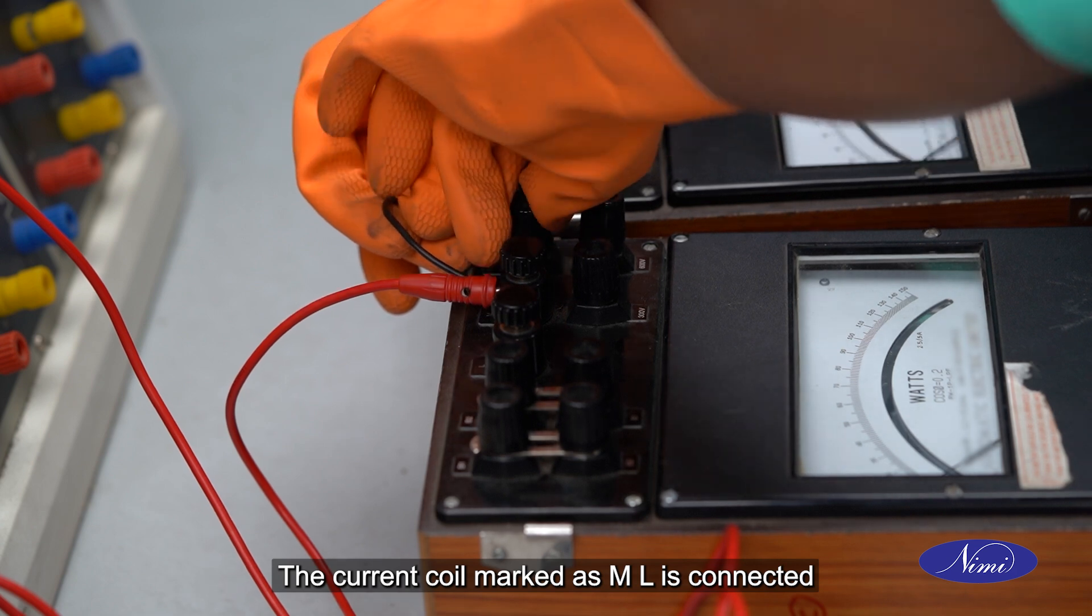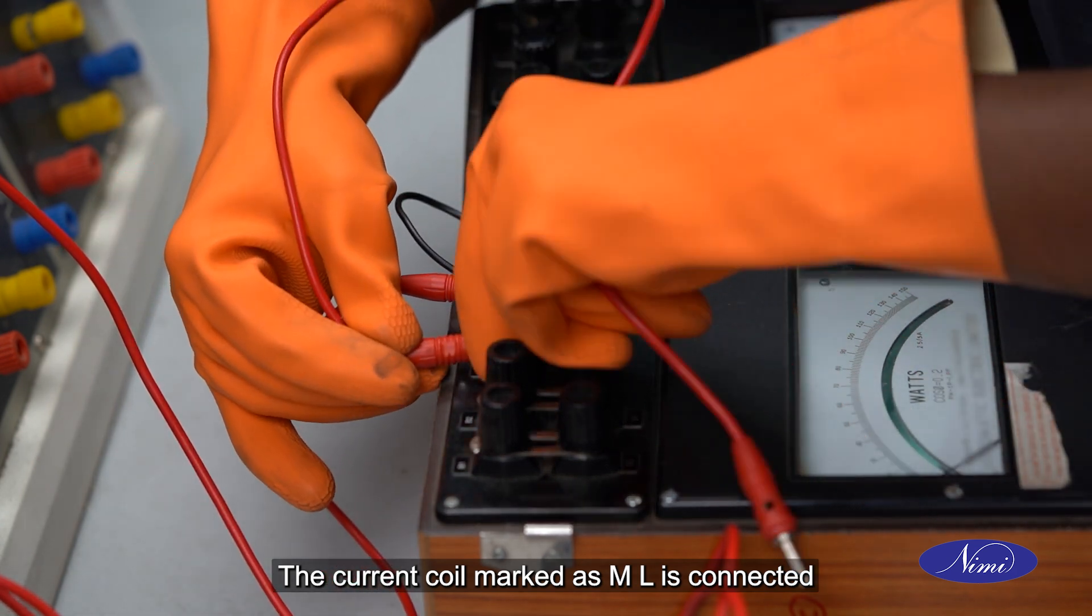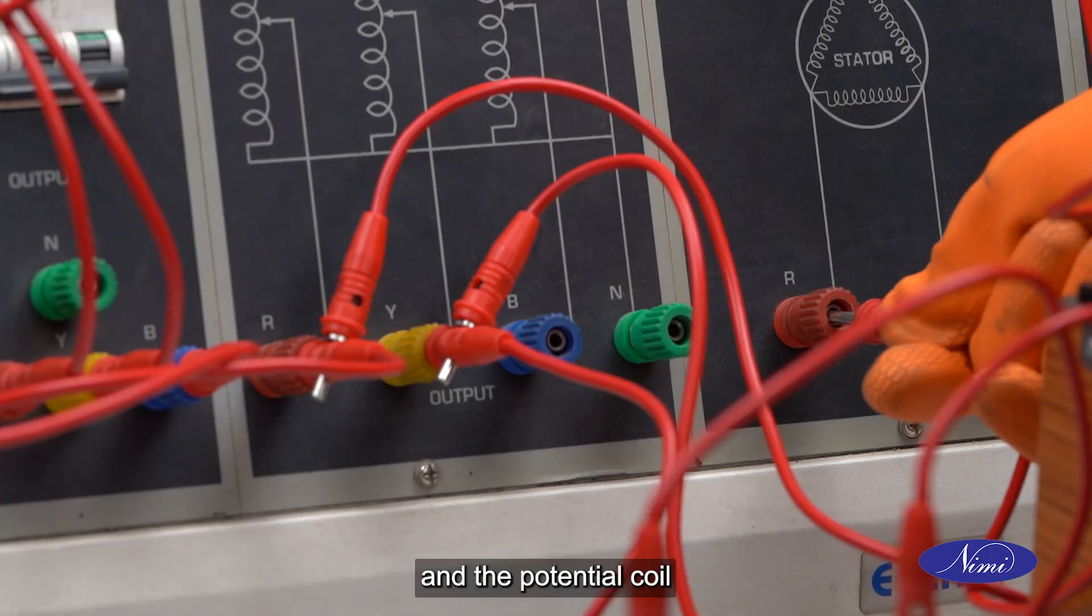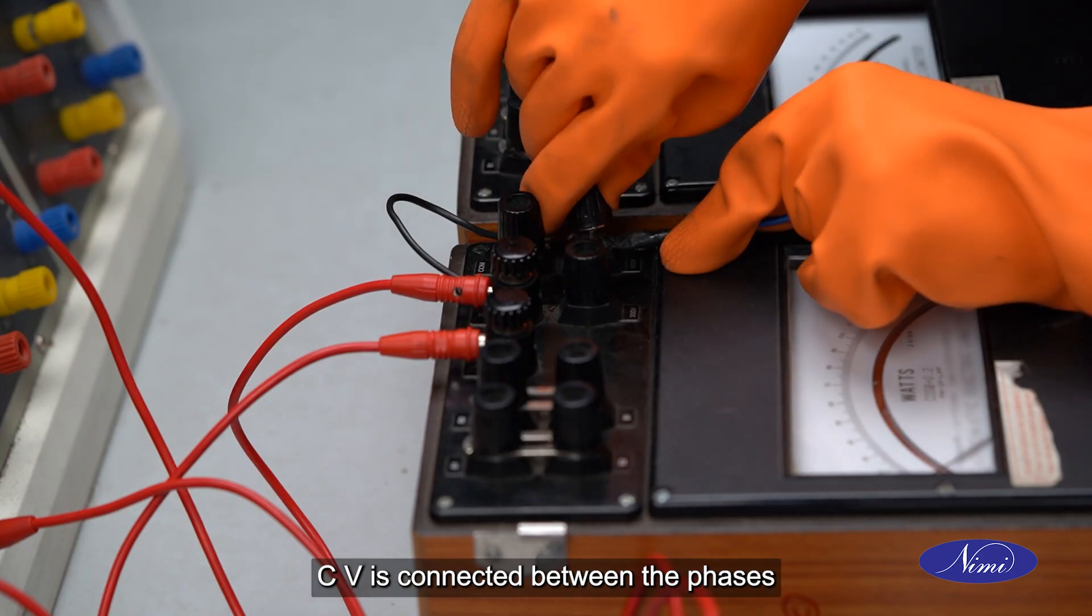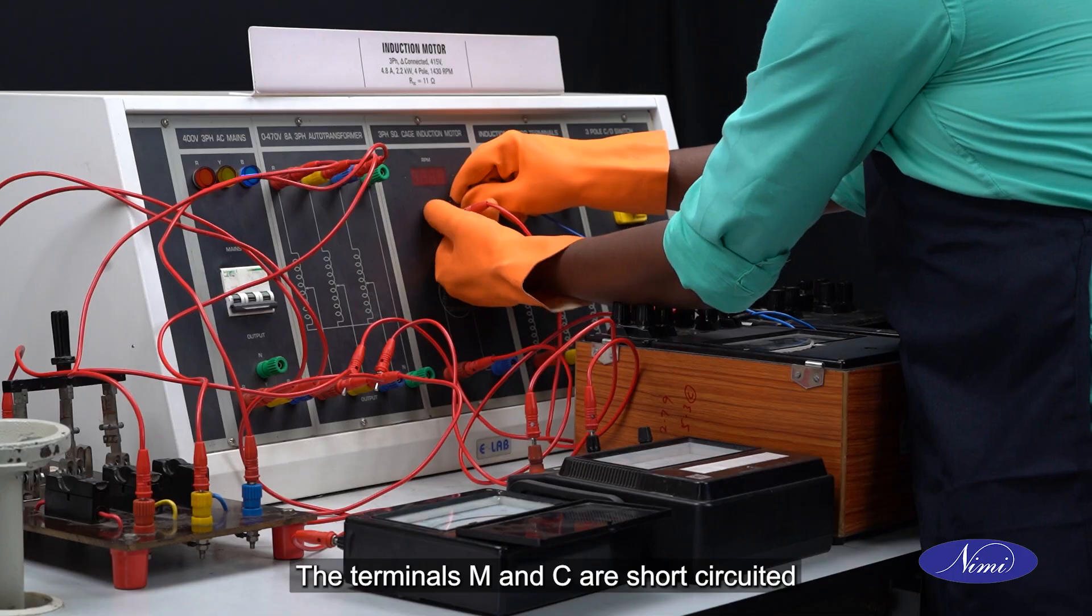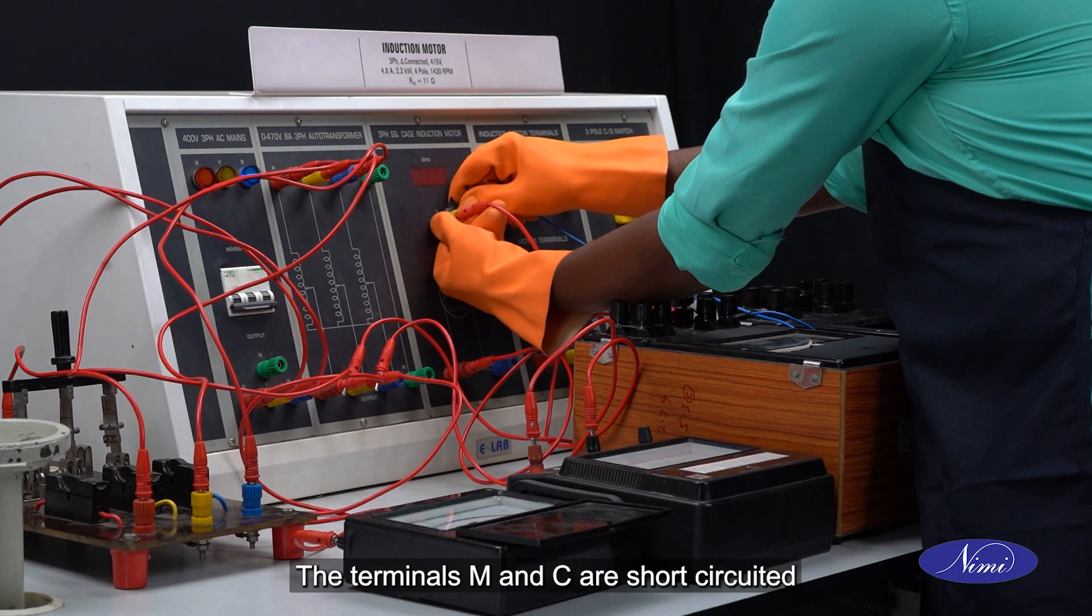The current coil marked as M-L is connected in series with the phase and the potential coil C-V is connected between the phases. The terminals M and C are short-circuited.